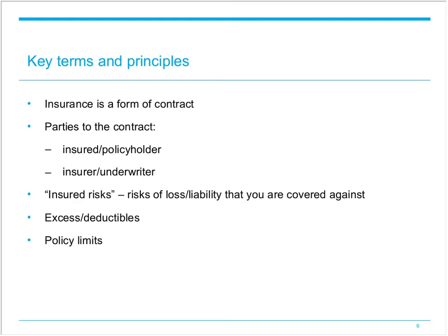Most insurance contracts have an excess or deductible, making the insured bear a proportion of the loss. For example, with a £1,000 excess on a £10,000 claim, the insured recovers only £9,000. Most policies also have a policy limit — the maximum sum recoverable — often including an individual limit per claim and an aggregate limit being the maximum recoverable in total in any given year.